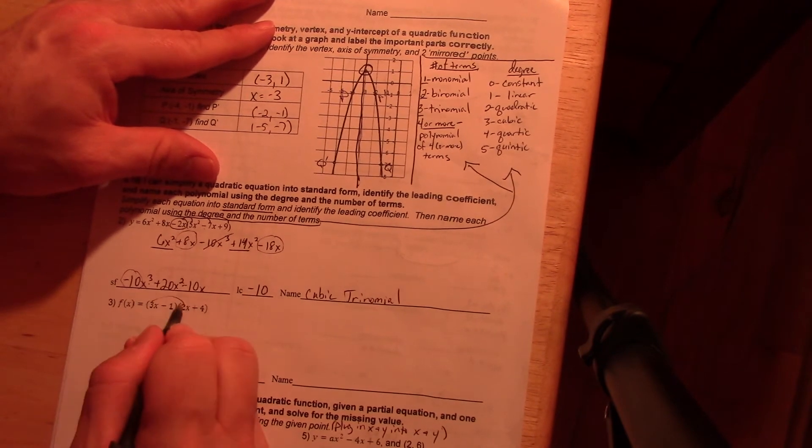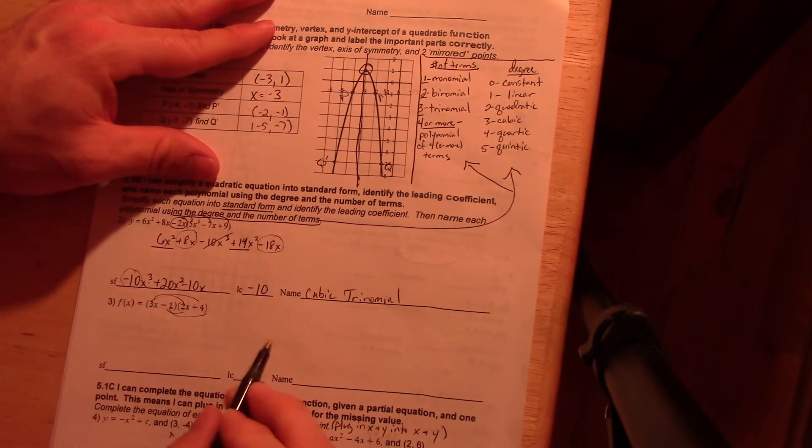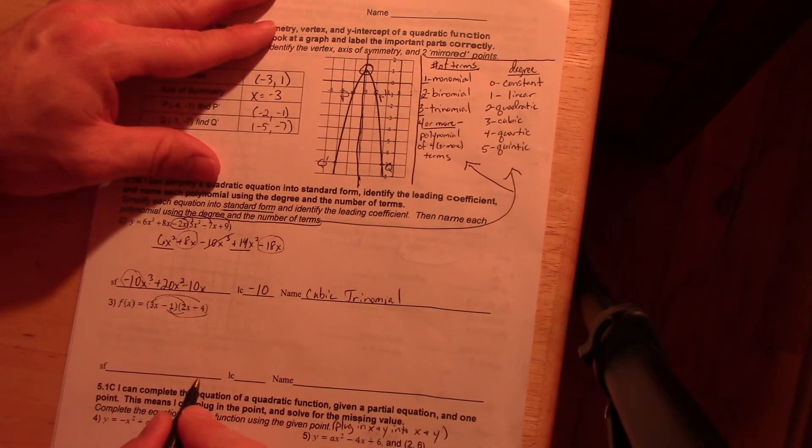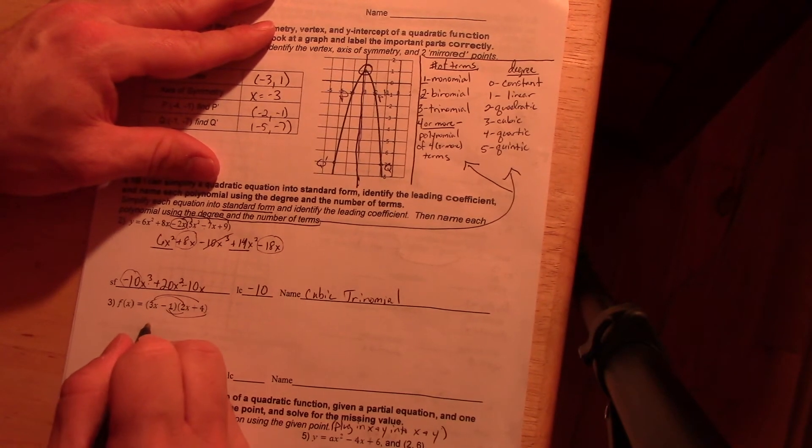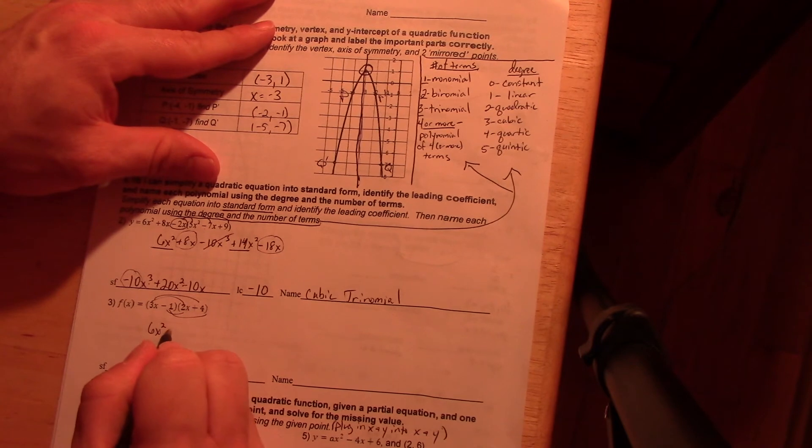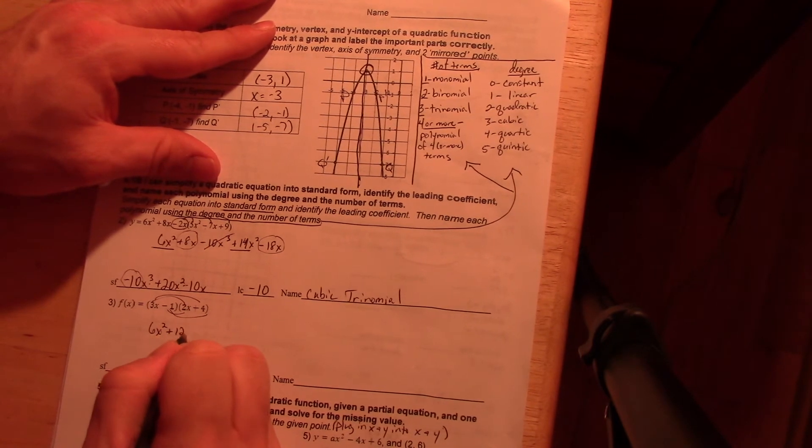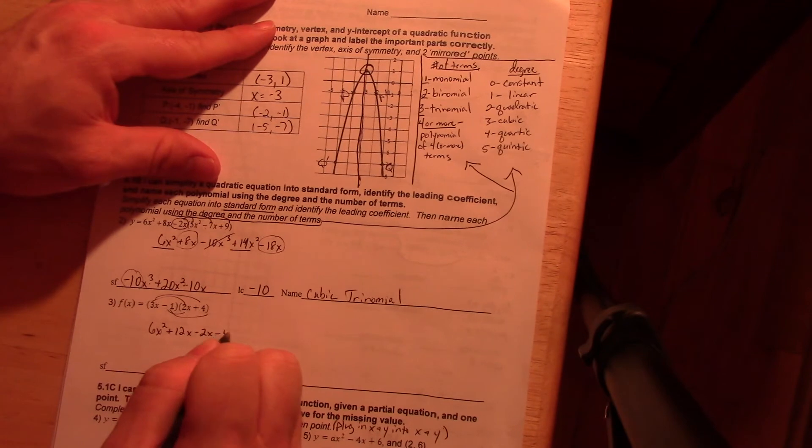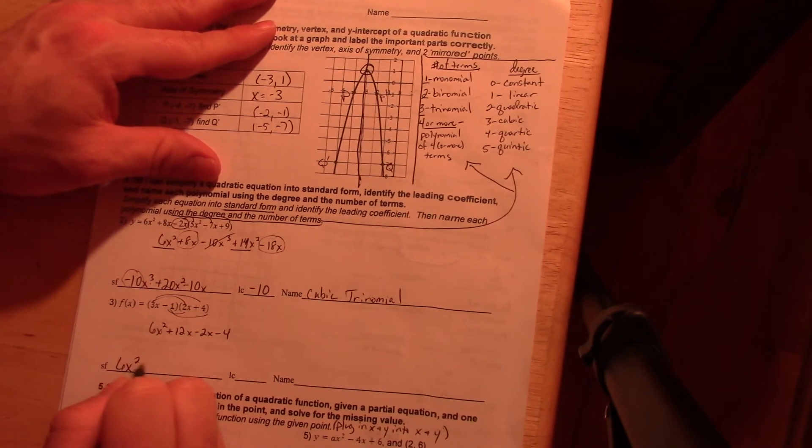Moving along to this one. This was an accident. I did not mean to have two trinomials here, because that's what is going to happen. But this is going to be six x squared, plus twelve x, minus two x, minus four.